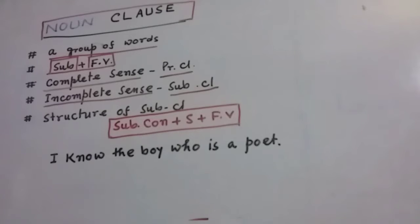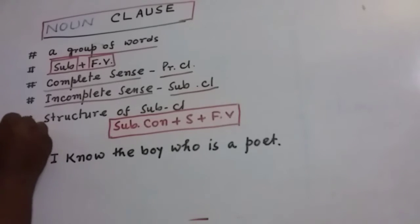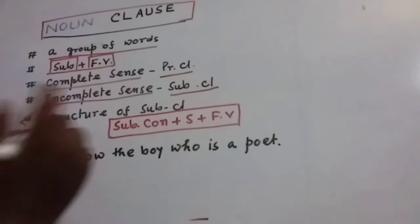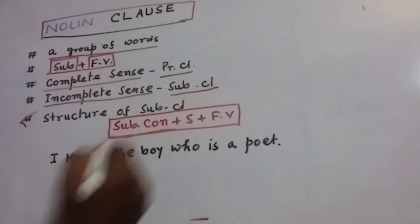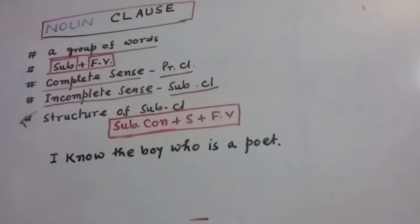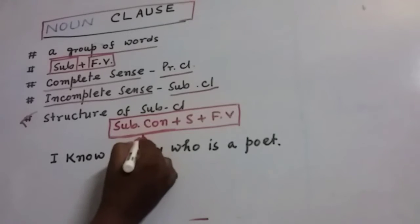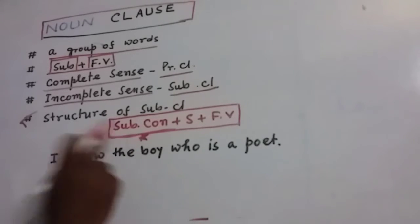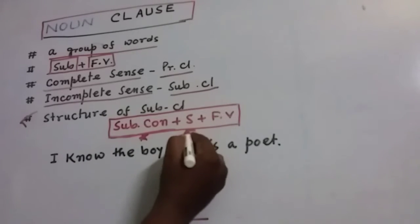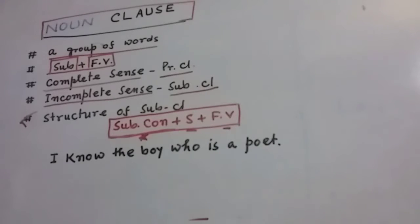This is the structure of a subordinate clause. First of all, you can see the subordinating conjunction. This is the most important thing for identifying the subordinating clause. A subordinating clause must start with a subordinating conjunction, then the subject, then the finite verb, and then the rest of the words.